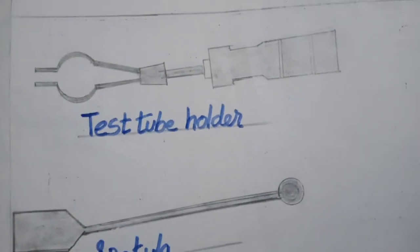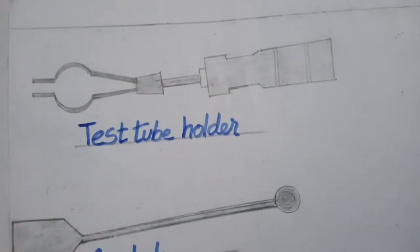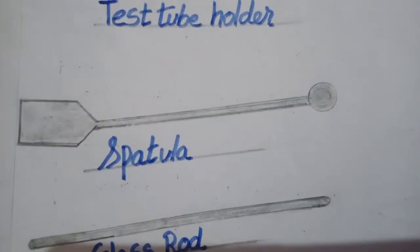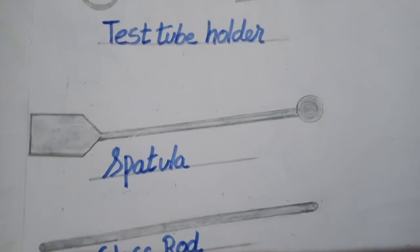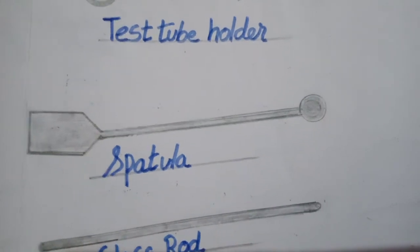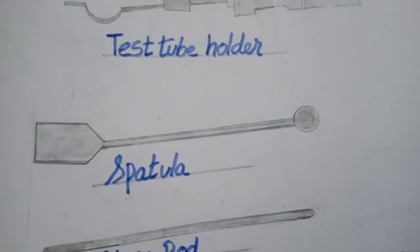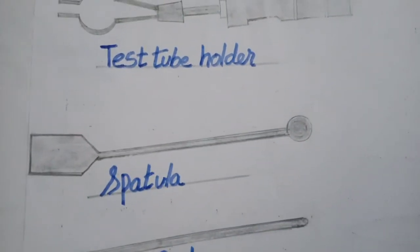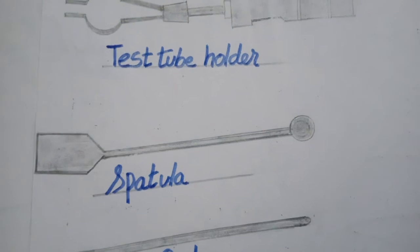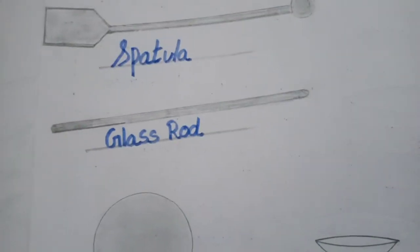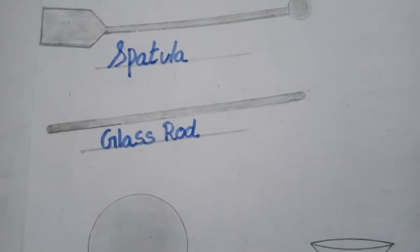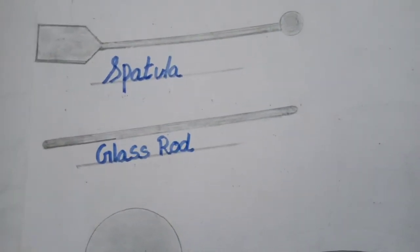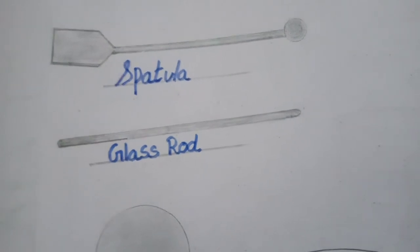Next one is a spatula. The spatula is used to put some salt and mix it in the test tube or beaker. Next one is a glass rod. This glass rod is used to mix the mixture of chemicals.